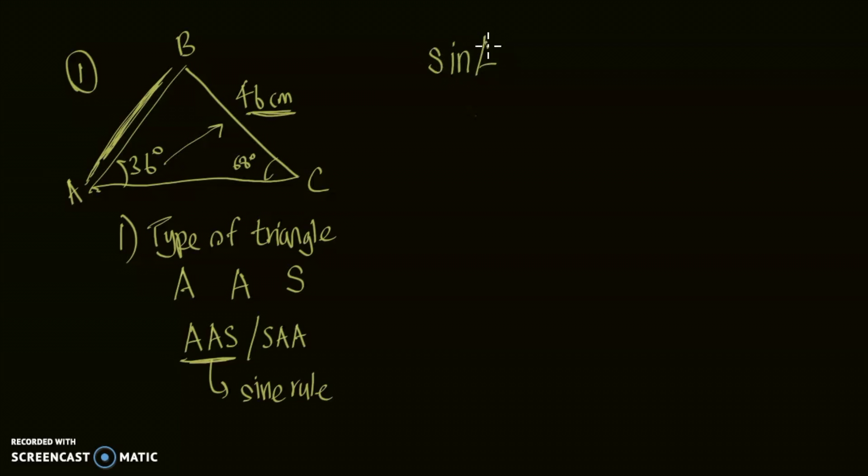So here in this case it would be sine A over a, because we're given the angle A and its direct opposite which is small a, is equal to sine C over small c. We're given the angle C but we're not given the side c.